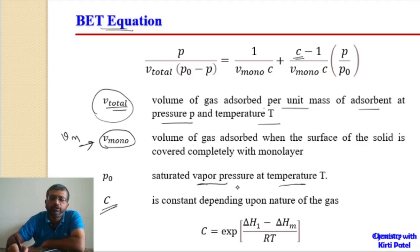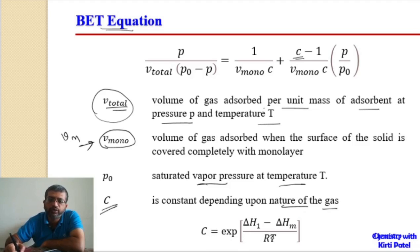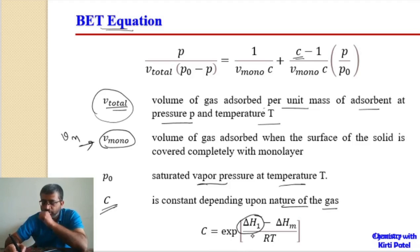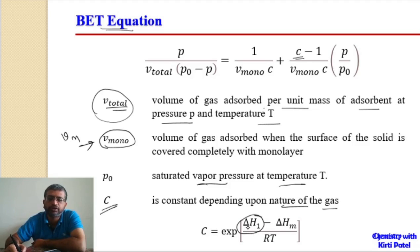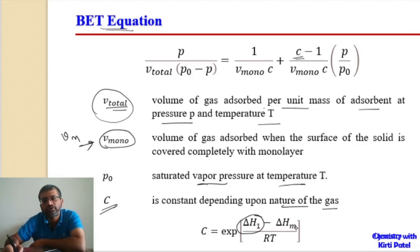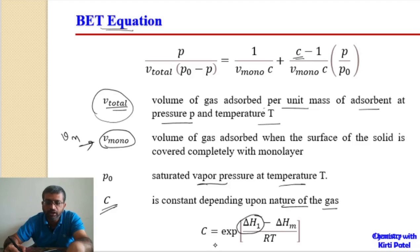The constant C is dependent on the nature of the gas and is given as e^[(ΔH₁ − ΔHm) / RT], where ΔH₁ is the standard heat of adsorption — the heat liberated for the formation of the first layer — and ΔHm is the heat of condensation for subsequent layers (second, third, fourth, etc.). So this expression gives us the value of C.